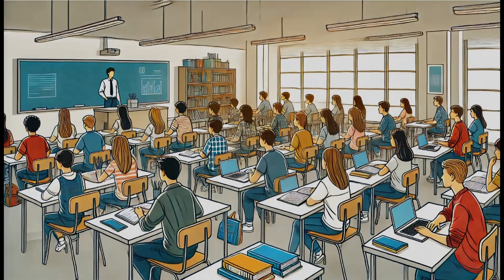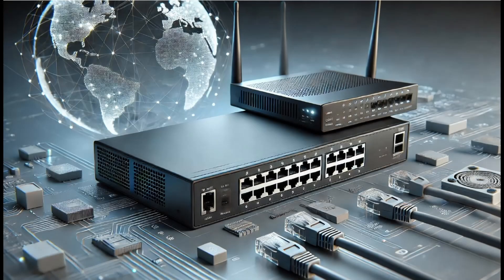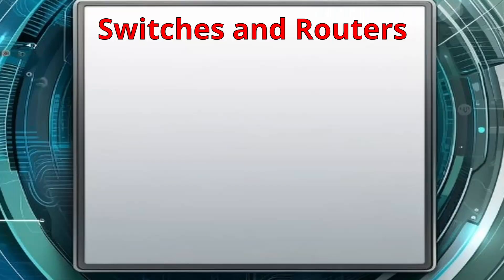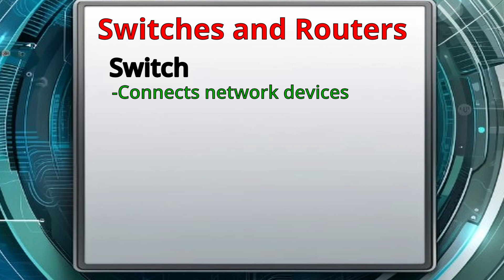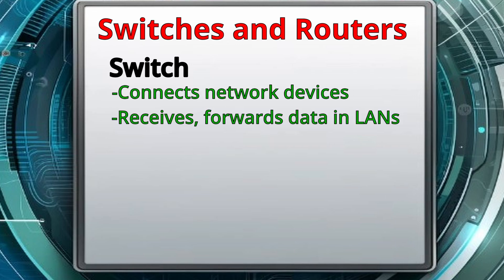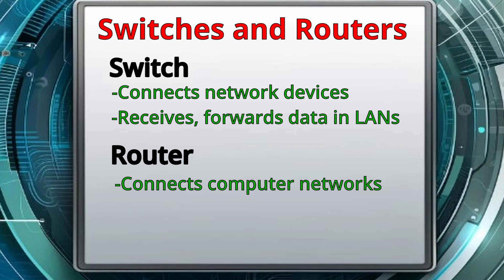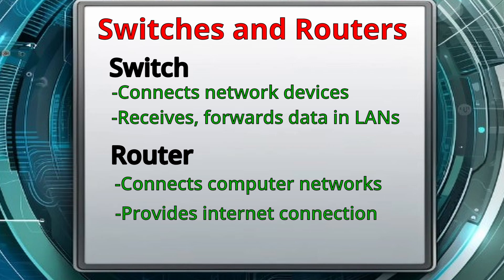In this chapter, we'll take a closer look at switching and routing. These are important components in having a network run smoothly. A switch is a communication device that connects other network devices and receives and forwards data to its specified destination within a LAN. A router is a communication device that connects computer networks and also receives and forwards data through the internet.